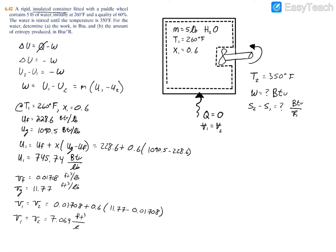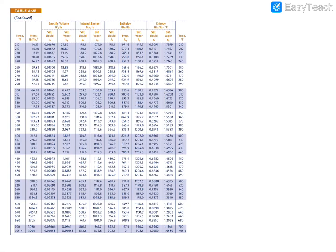Now we have T2 = 350°F and v2 = 7.069 ft³/lb for state 2. Checking the saturated water table at 350°F, the saturated liquid specific volume is 0.01799 and saturated vapor is 3.346 ft³/lb. Since our specific volume of 7.069 ft³/lb exceeds the saturated vapor value, we are in the superheated region.